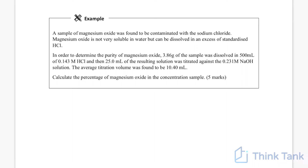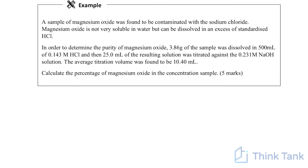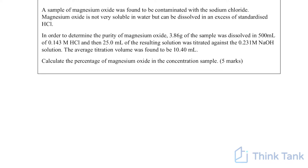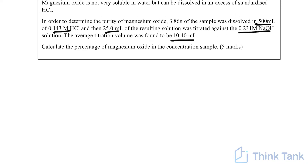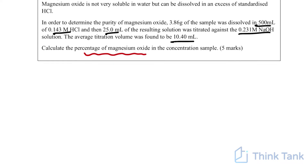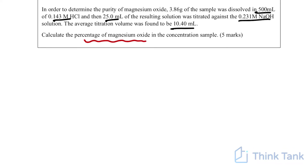This is a challenging back titration calculation. With these types of questions, it's really helpful to always draw a diagram. The question states: a sample of magnesium oxide was found to be contaminated with sodium chloride. Magnesium oxide is not very soluble in water but can be dissolved in excess standardized HCl. To determine the purity of magnesium oxide, 3.86 grams of the sample was dissolved in 500 mL of HCl, then 25 mL of that was titrated against 0.213 mol/L sodium hydroxide, with an average titration volume of 10.4 mL. The question asks us to calculate the percentage of magnesium oxide in the original sample.